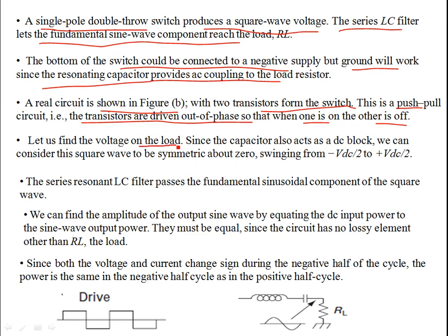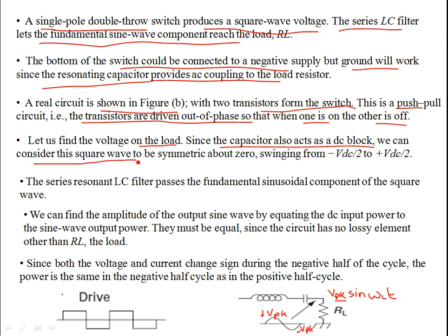Now we want to find V_peak, the amplitude of the sinusoidal output. The output voltage is V_peak × sin(ω_L × t), where ω_L is the frequency favored by the series LC resonant circuit. Since the capacitor is a DC block, we consider the square wave to be symmetrical about zero — the drive signal is ±VDC with no DC component.